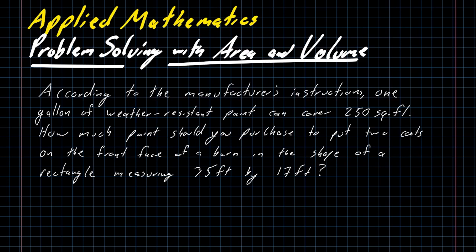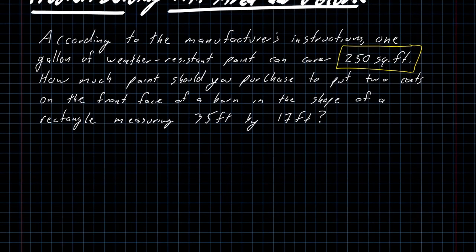The first one I want to point out is how do I know that this problem is talking about area, and the answer is kind of boringly easy. I have a measurement here of 250 square feet. A measurement of square feet means that I have to be talking about area. Step one of this problem is definitely going to be calculate the area of what we are measuring. The next step is the tricky one, because it is really easy to miss.